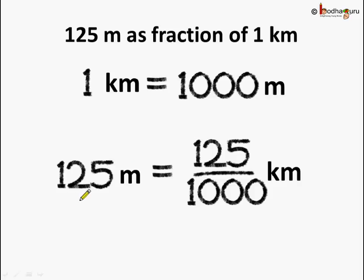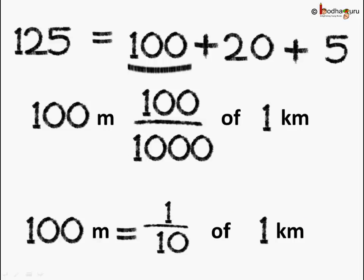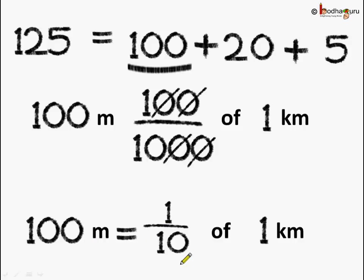This means 125 meters is equal to 125 parts out of 1000 parts. Now let us write 125 in the expanded form. So it is equal to 100 plus 20 plus 5. Coming to the 100 part: 100 meters means 100 parts out of the 1000 parts of 1 kilometer. Now let us divide the numerator and the denominator by 100. What do we get? 100 meters is equal to 1 by 10 of a kilometer.